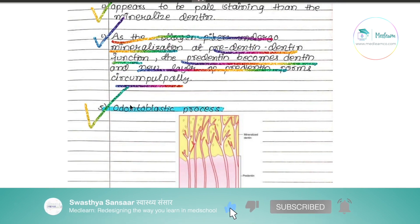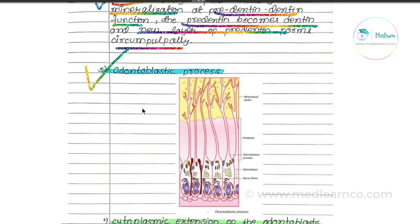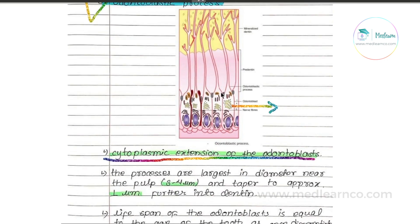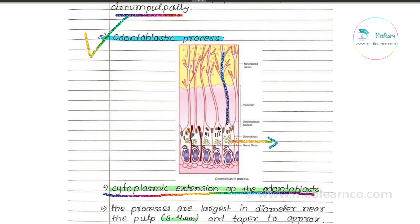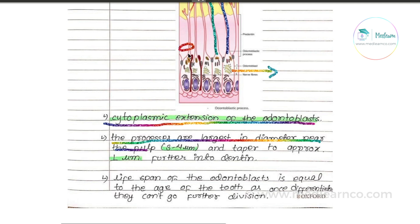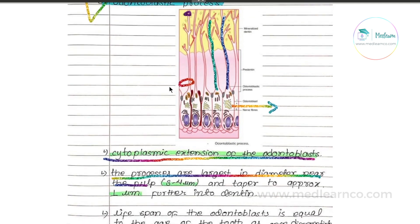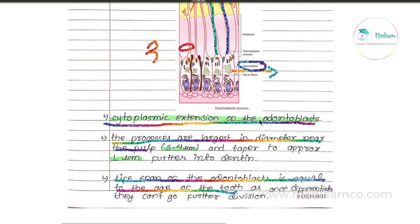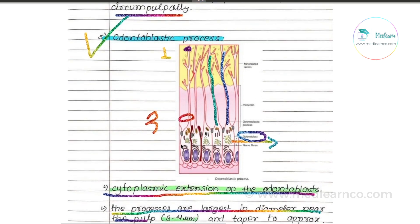Lastly, the odontoblast process is the cytoplasmic extension of the odontoblast that runs within the dentinal tubule. The process is largest in diameter near the pulp — approximately 3 to 4 micrometers — tapering to about 1 micrometer toward the periphery. The life span of the odontoblast is equal to the age of the tooth.